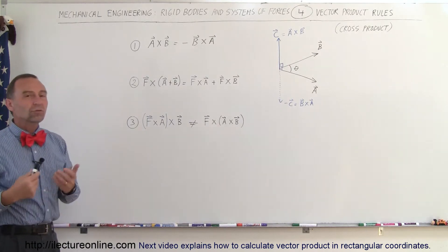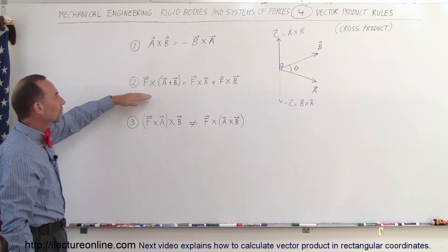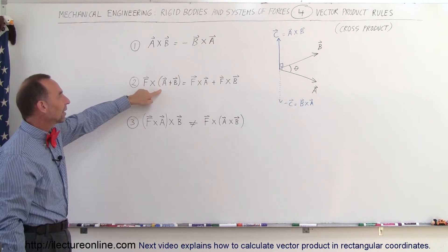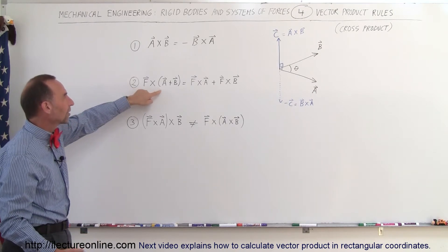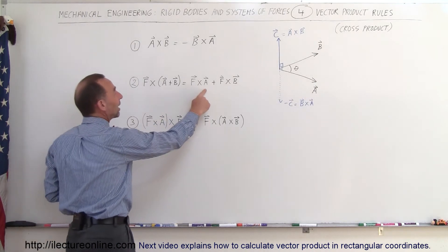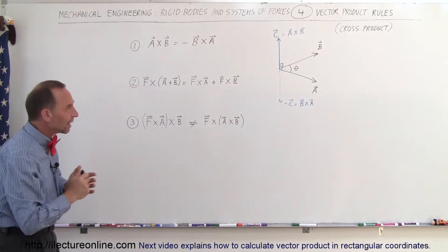But we also have what we call the distributive property, and we have the associative property. In the case of the distributive property, if we have two vectors added together, and then we take that sum, and we have it as part of a cross product, F cross A plus B, we can actually separate that, and write as F cross A plus F cross B, that's perfectly fine, that works out, and you get the same result.